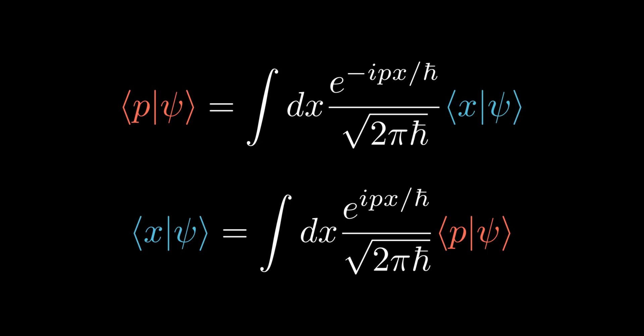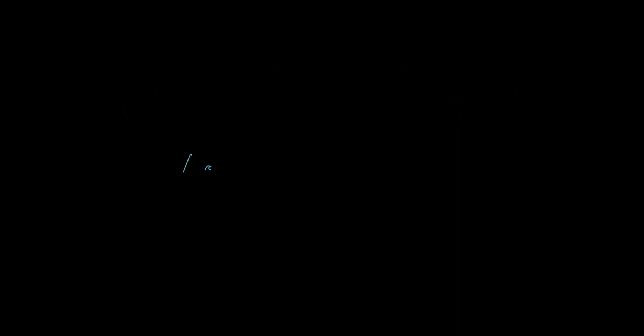Let's now look at a concrete example. For a particle with a normally distributed position about the origin, with wave function given by the equation on the screen, where we recognize the standard deviation sigma as the uncertainty in position.